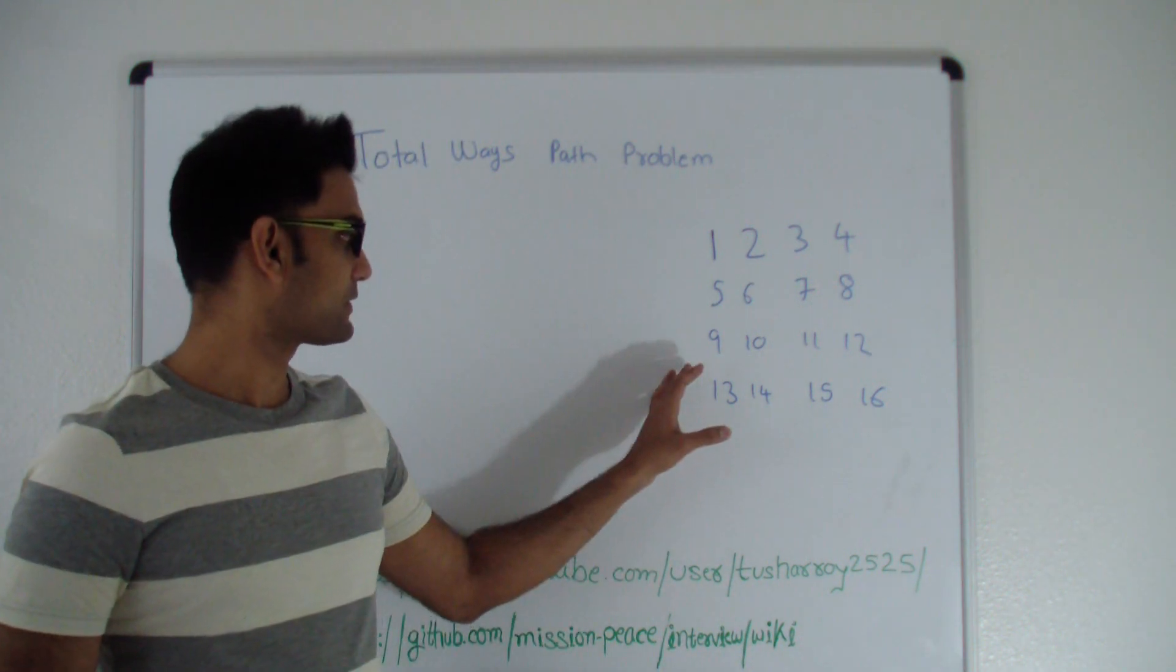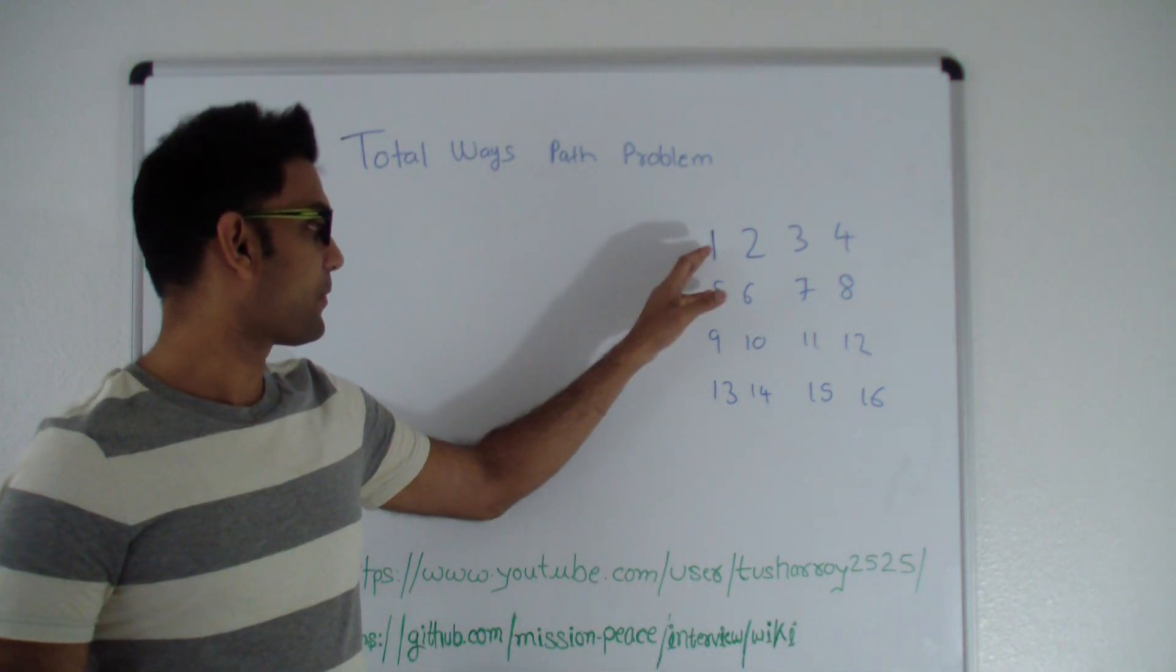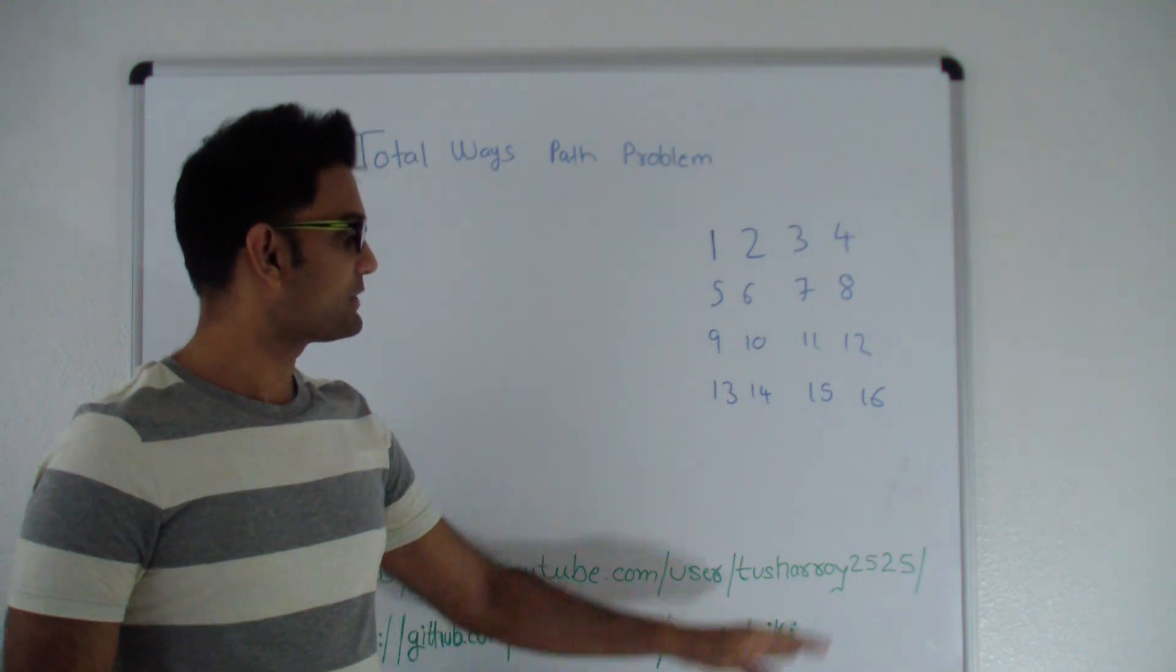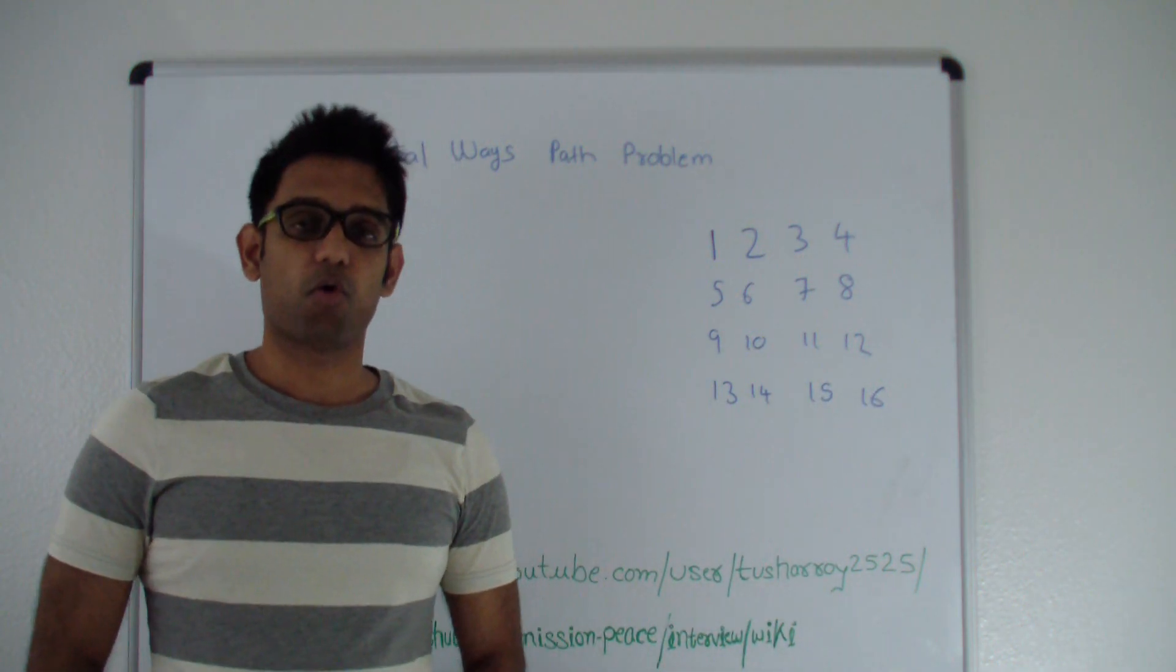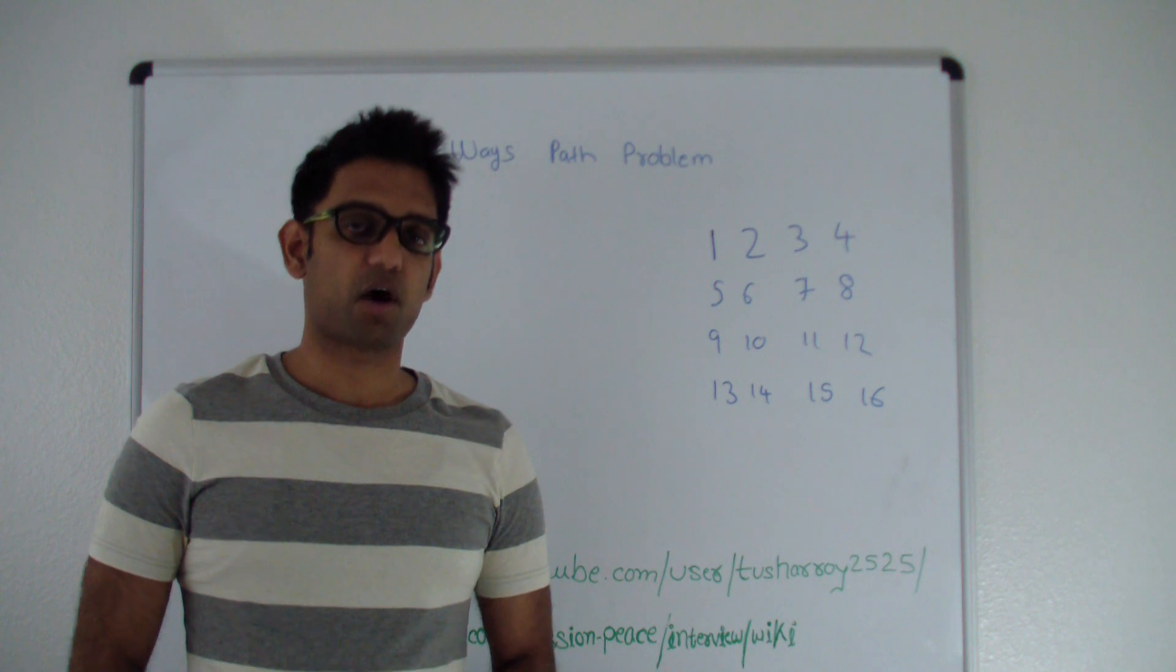So the question is, given a matrix and you are at the top left corner, how many ways can you reach the bottom right corner? The thing is you can only move in right direction or down direction.